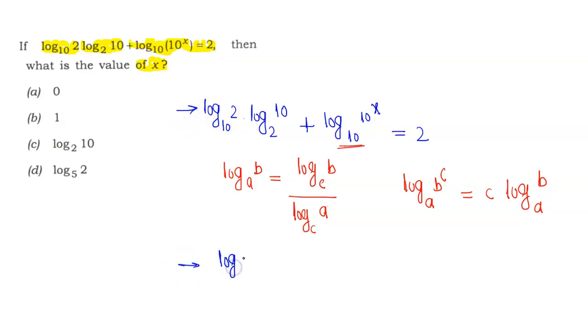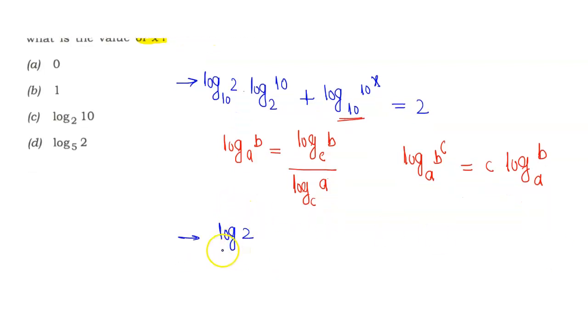This becomes log 2 divided by log 10 times log 10 divided by log 2, plus x times log base 10 of 10 equals 2.